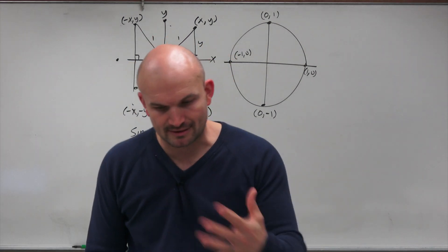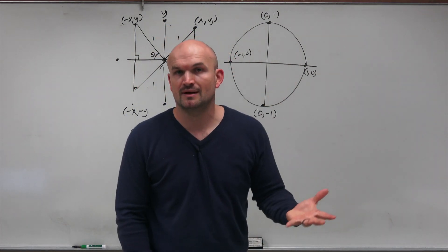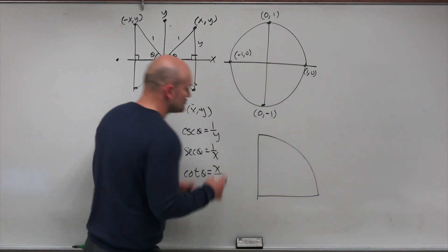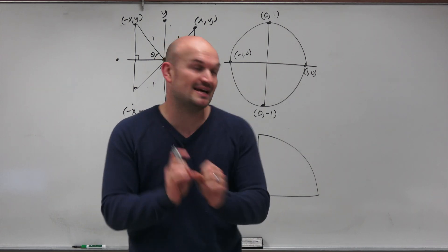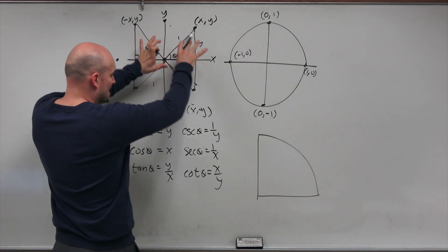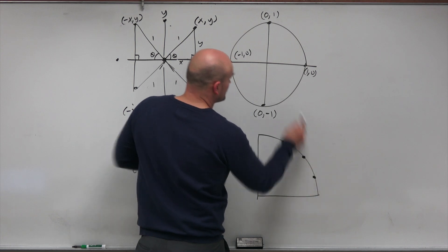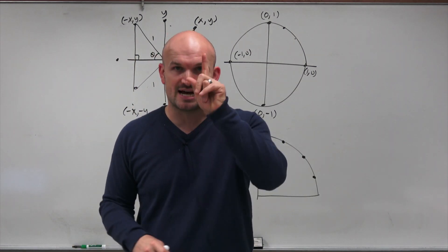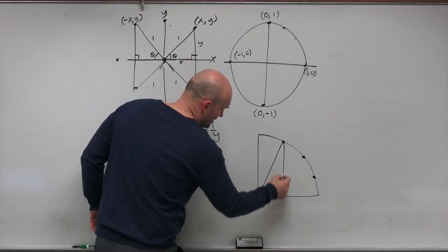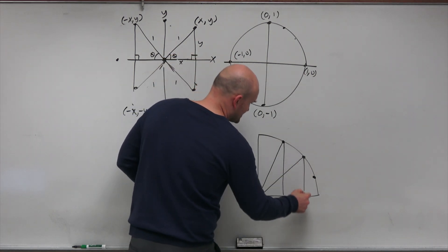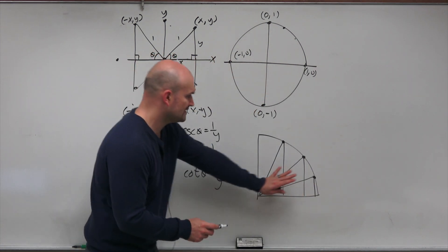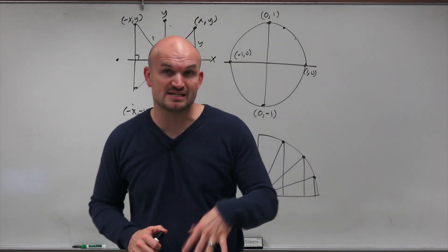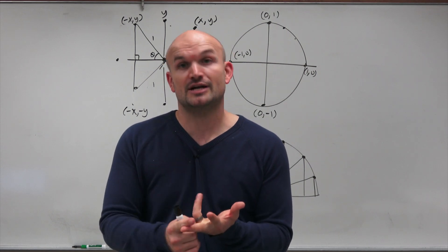The next thing we need to understand: you've created a circle based on a radius of 1, but where did the triangles go? They didn't go anywhere — they're still there. What we're going to focus on when evaluating trigonometric functions using the unit circle are our special right triangles: the 45-45-90 triangle and the 30-60-90 triangle. We can also write it as a 60-30-90 triangle, so we can represent all of these angles.